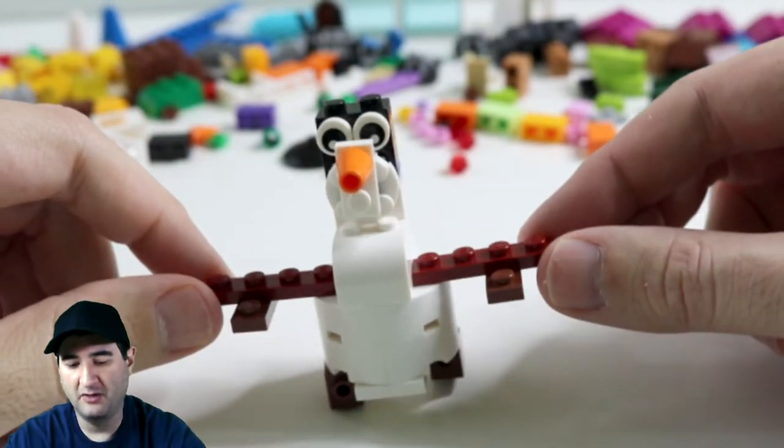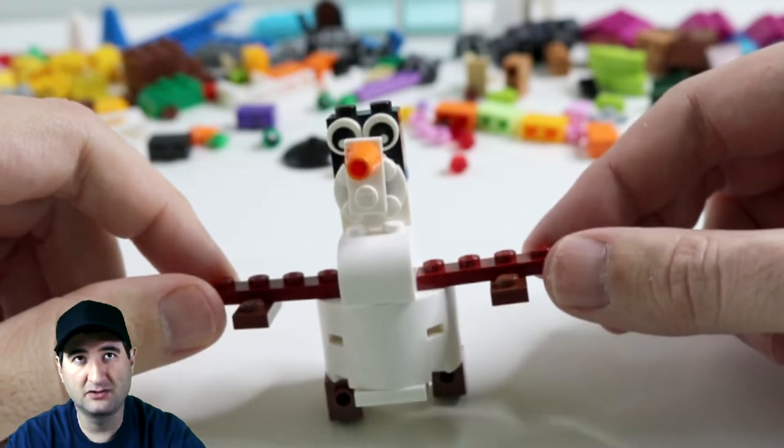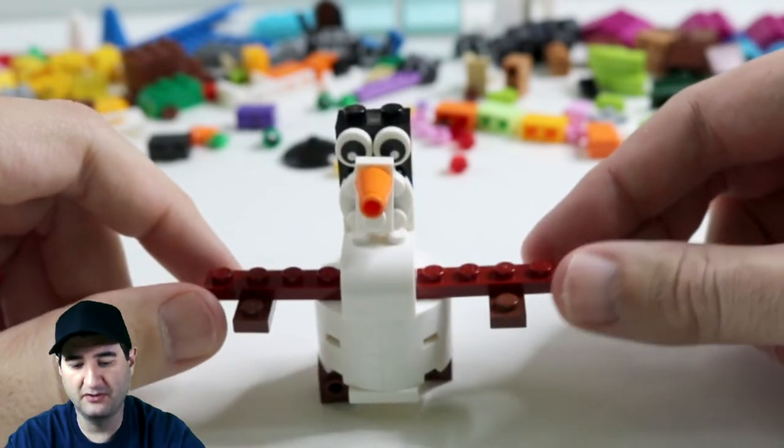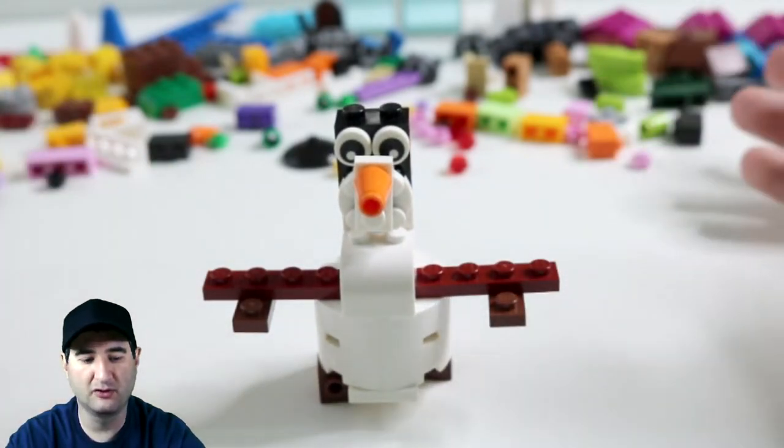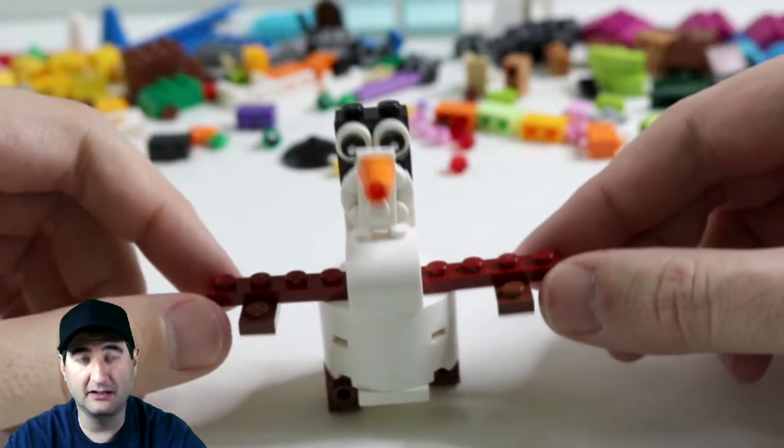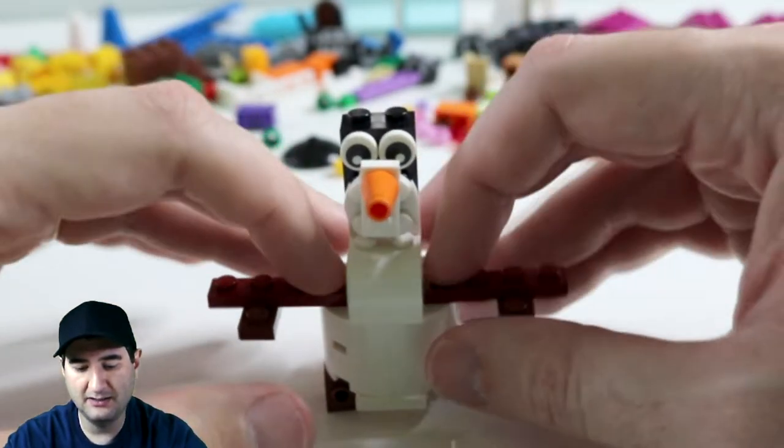So we have an Olaf, or in our case, in our house, we call it Olafie. So we have built an Olaf out of 221 pieces, not a lot of pieces, not a lot of white pieces, and I think we did pretty well.